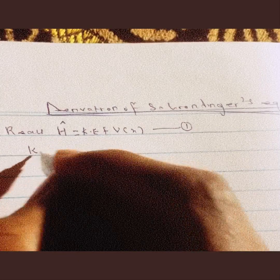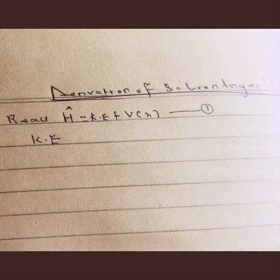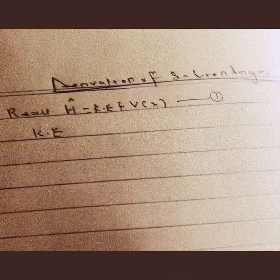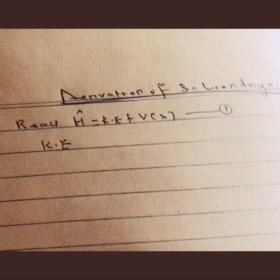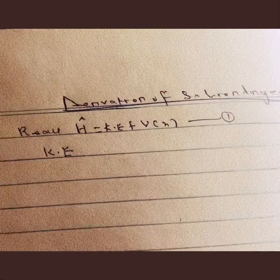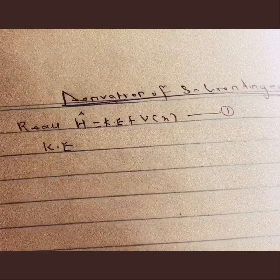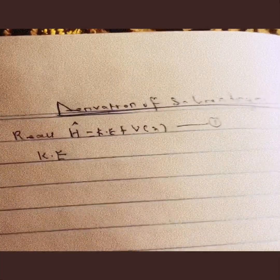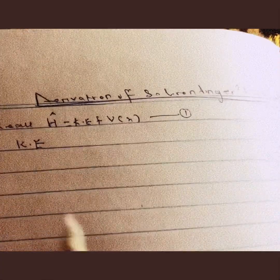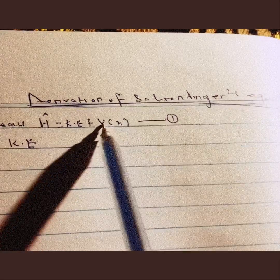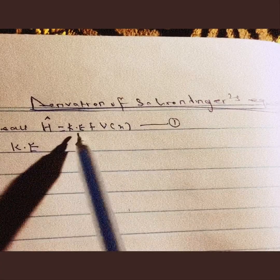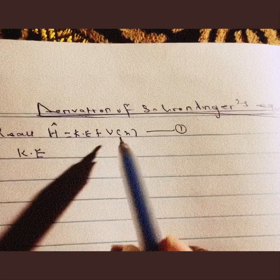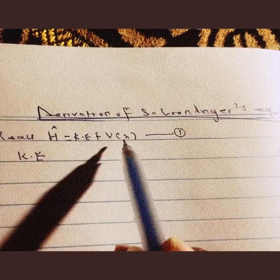We know that the kinetic energy for a macro object, such as a ball — when we kick a ball, we attain a certain velocity. The energy it has by virtue of its motion is known as kinetic energy. The potential energy is the energy a body has by virtue of its height or position. So potential energy is a function of position, while kinetic energy is a function of velocity.